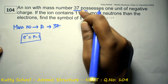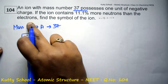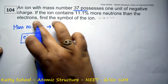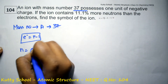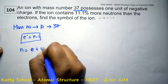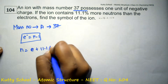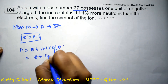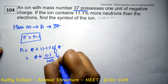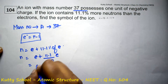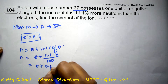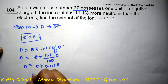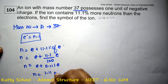The ion contains 11.11% more neutrons than electrons. So, neutron equals electron plus 11.11% of electron. That is: N = E + (11.1/100)E = E + 0.111E = 1.11 electron.